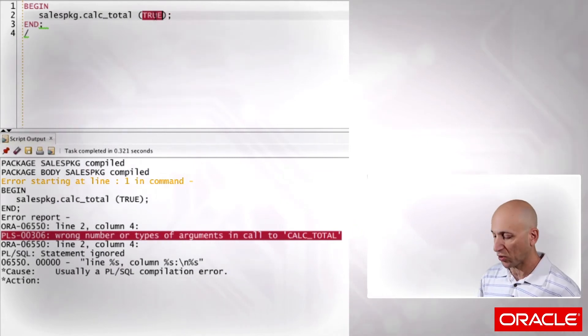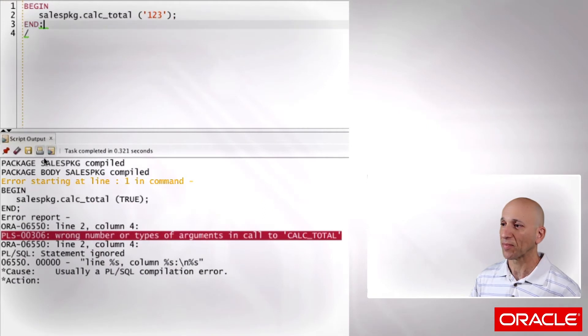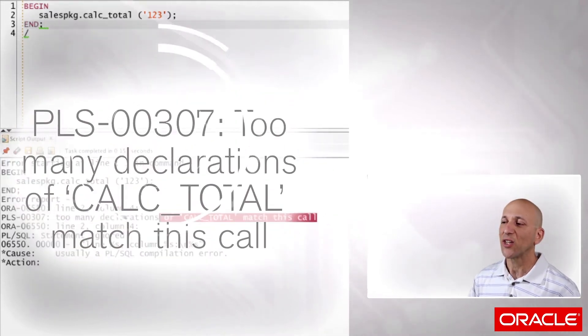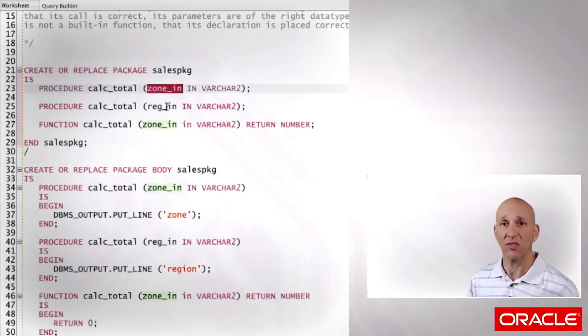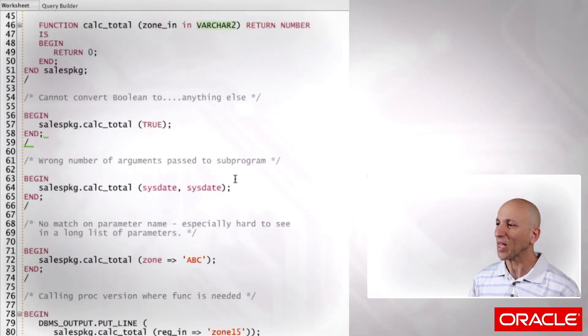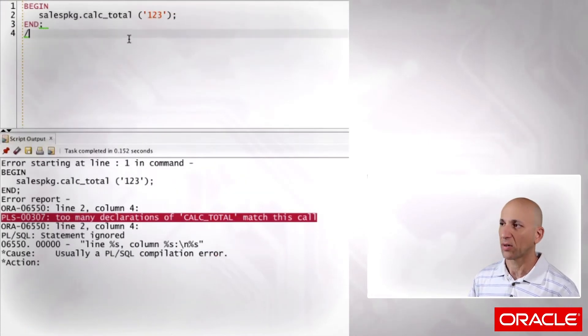Now, if I put in 1, 2, 3, let's try that. Passing 1, 2, 3, that's a string, so that should work, right? Run my code again. Now in this case, I've got a slightly different error, which I'll explore in detail in a separate episode, which is 307: Too many declarations of calctotal match this call. So the problem wasn't with my data type or the number of arguments I'm passing. I've only got one I can pass in for any of these, and they're strings. The problem is Oracle couldn't figure out which one. Like I say, we'll come back to that. But definitely passing true didn't work.